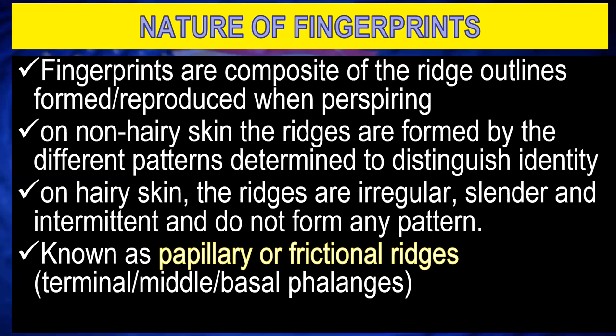Fingerprints are a composite of the ridges' outlines formed or reproduced when perspiring. However, insofar as real impressions or ink impressions are concerned, perspiration is not needed. It is the latent impressions — the chance impressions taken from the crime scene — that require perspiration. If there is no perspiration, there may be no latent impression at the crime scene. These ridges are found on the non-hairy skin, formed by different patterns used to distinguish identity. On the hairy skin, the ridges are irregular, slender, and intermittent, and do not form any pattern, unlike on the palmar surface or the sole of the feet where ridges form a specific and distinguishable pattern. The ridges are also known as papillary or frictional ridges.